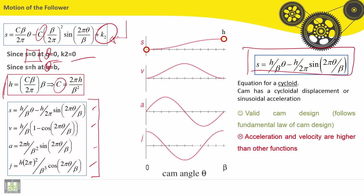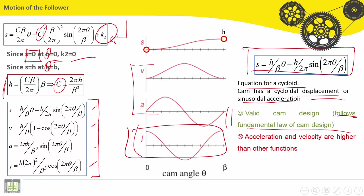This equation is for a cycloid. The cam has cycloid displacement with sinusoidal acceleration. This cam design is valid and follows the fundamental law of cam design—jerk, and especially velocity and acceleration, are finite for all periods. However, acceleration and velocity here are higher than other functions.